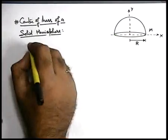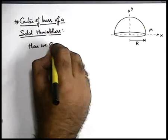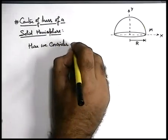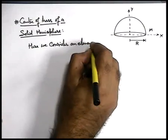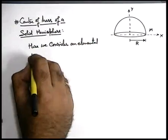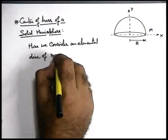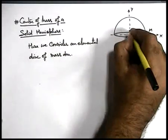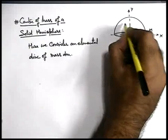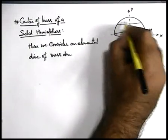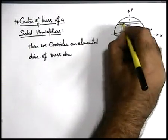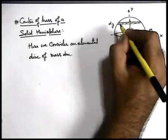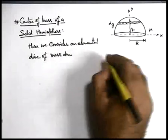So in this situation, we consider an elemental disc of mass dM. In this situation at a height Y from the center, we consider a disc which will be of width dY, and we consider its mass to be dM.